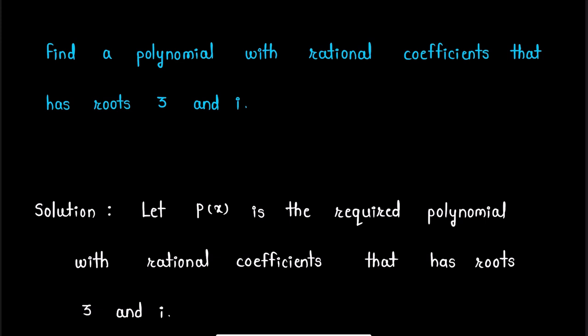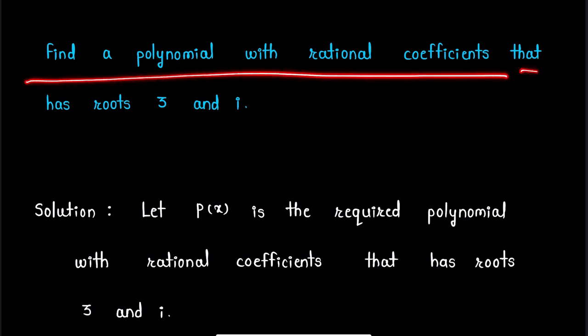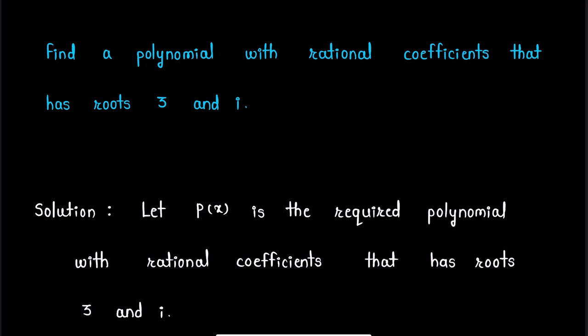Hello friends, welcome back to Rising Mathematics. In this video, we are going to solve this question related to properties of real polynomials. The question is: find a polynomial with rational coefficients that has roots 3 and iota.